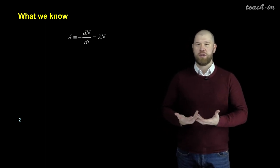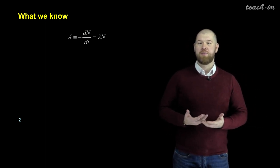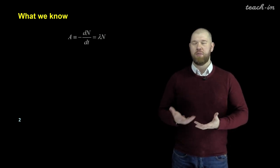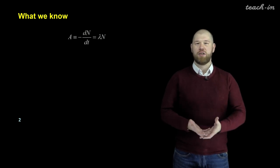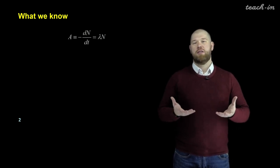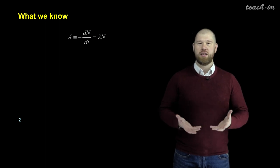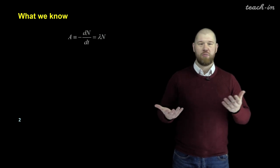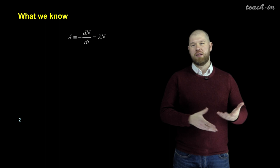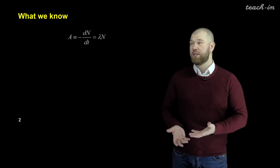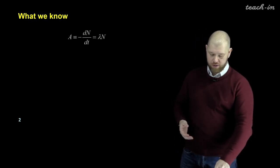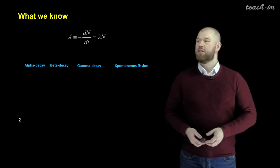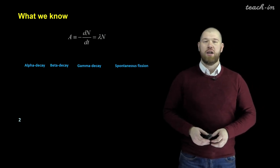First of all, we know about the phenomenon of radioactivity — that it is a spontaneous process accompanied by the release of energy and particles. If we know the characteristics of a radionuclide, we can calculate its activity from its mass, or vice versa. We know different types of decay: alpha decay, beta decay, gamma decay, and spontaneous fission.